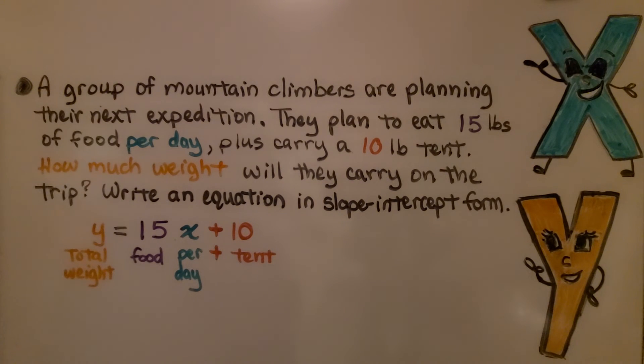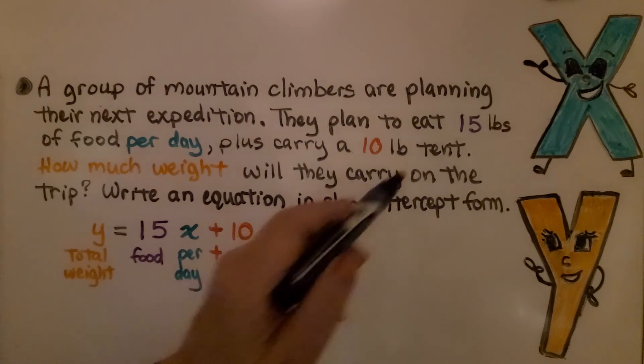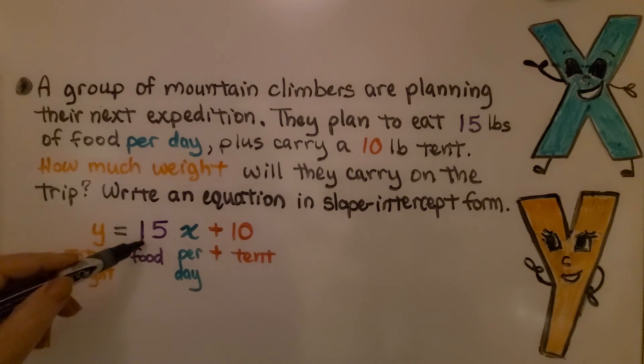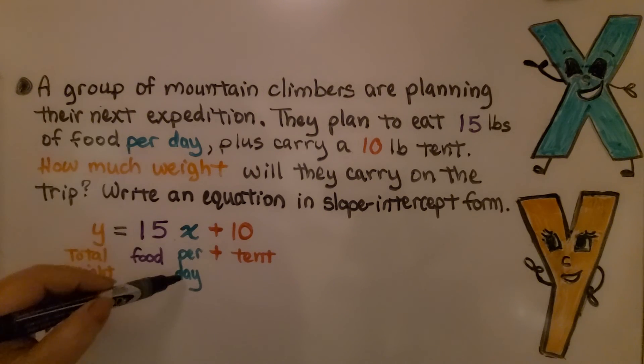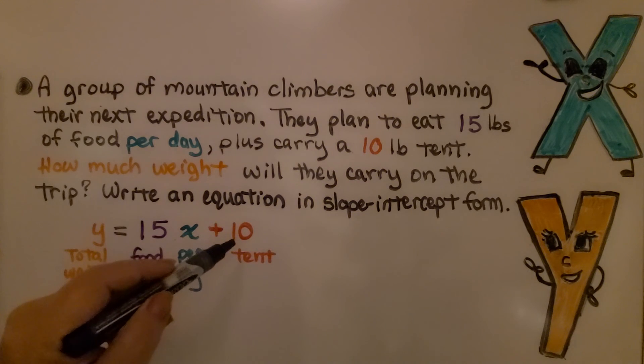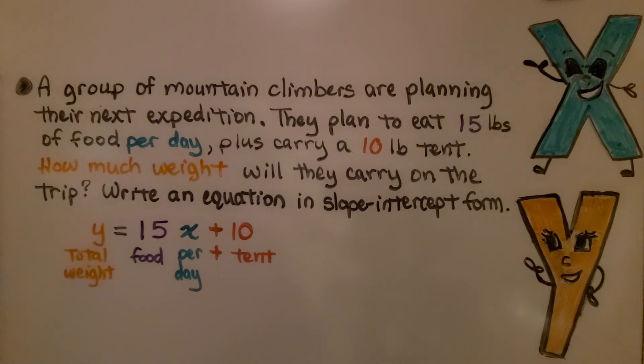Let's see if we can write another equation. A group of mountain climbers are planning their next expedition. They plan to eat 15 pounds of food per day plus carry a 10-pound tent. How much weight will they carry on the trip? Write an equation in slope-intercept form. We need to find how much weight, so that's y. That is going to be our output value. We know they're going to be carrying 15 pounds of food per day, so we have 15x. x is going to be our per day, that's our input. We know they have a 10-pound tent that needs to be added to it. So our equation is y = 15x + 10.